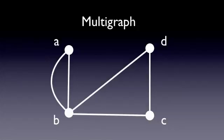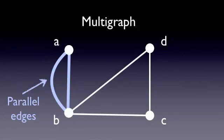The difference between a simple graph and a multigraph is that a multigraph allows the same pair of vertices to be connected by more than one edge. And if two edges share the same pair of vertices, we refer to those as parallel edges.